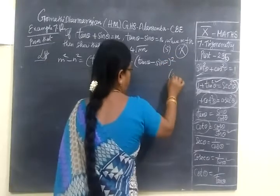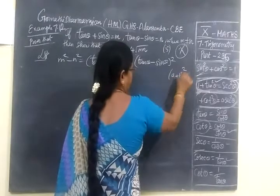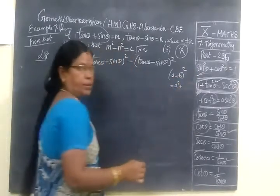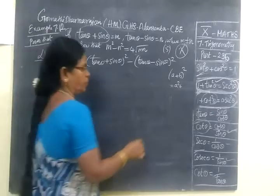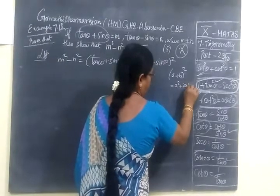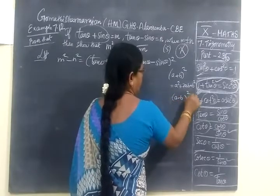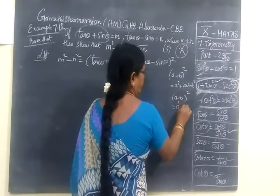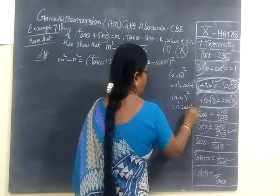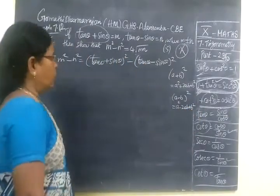Here we are using the formula A plus B whole square equal to A square plus 2AB, not minus 2AB. So, plus 2AB plus B square.